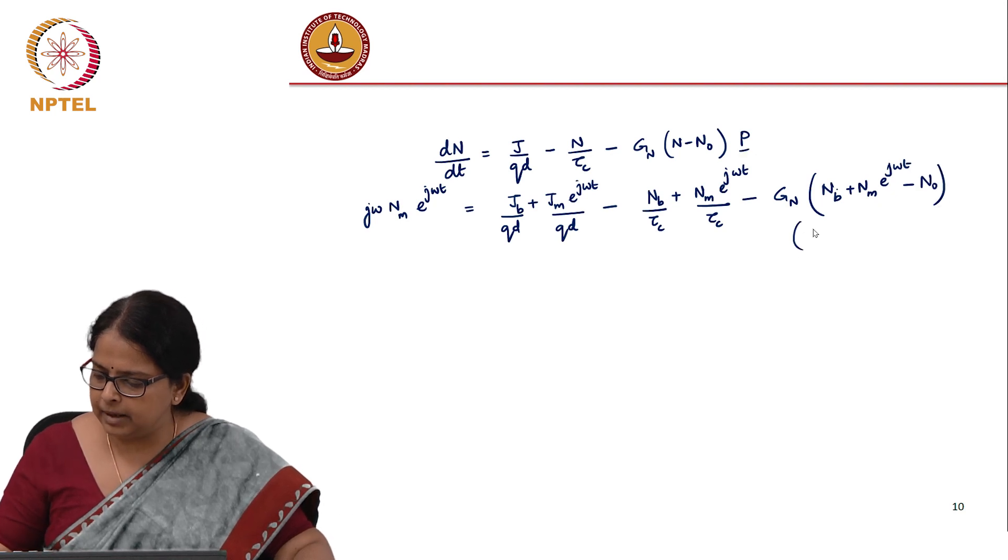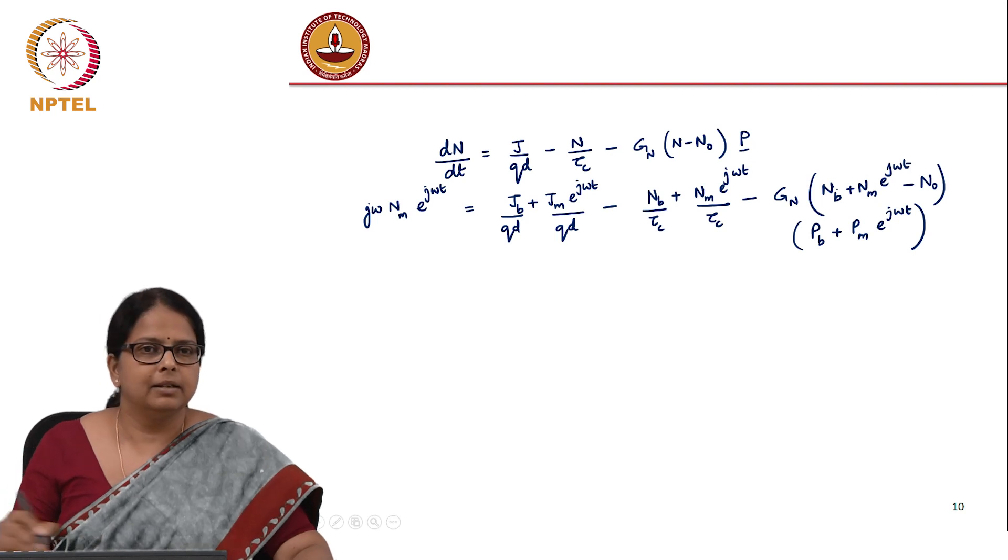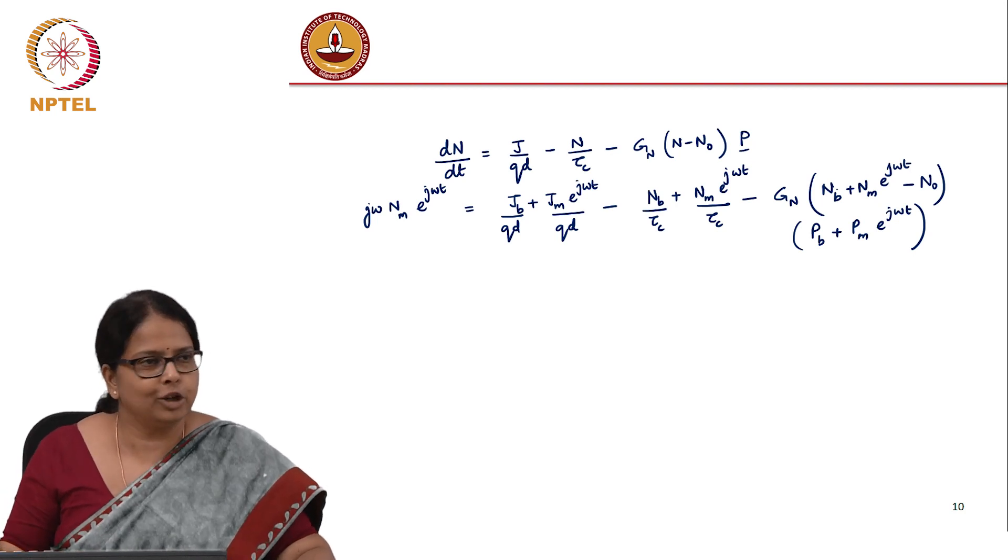The challenge is here you have p, so this should be p_b plus p_m*e^(j*omega*t). It looks complicated, but if you keep solving this is not as complicated.